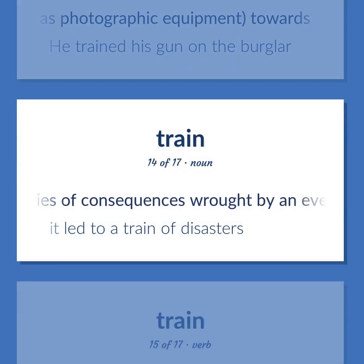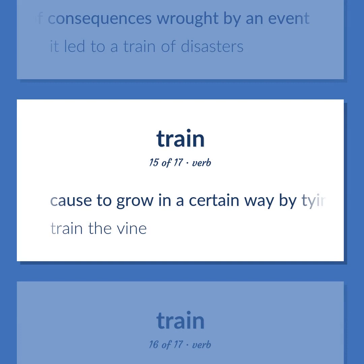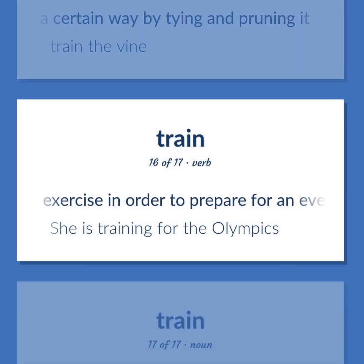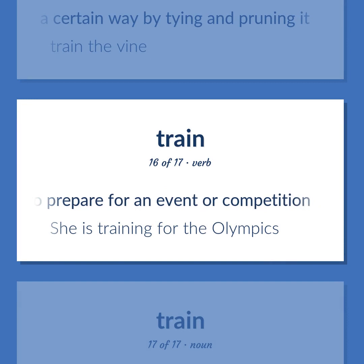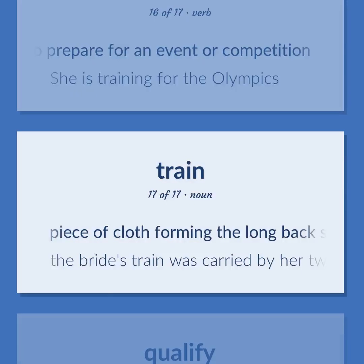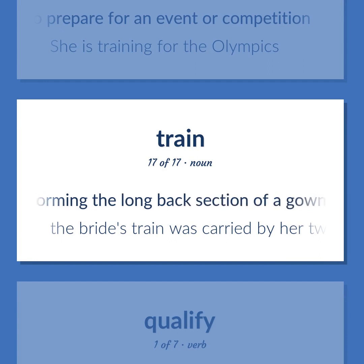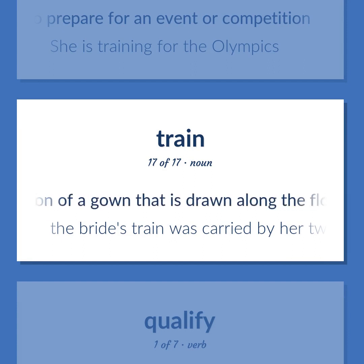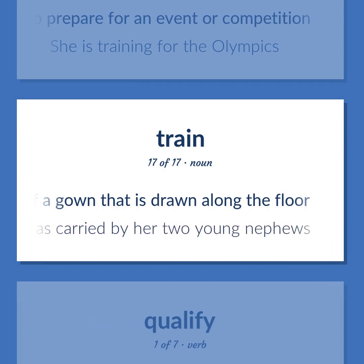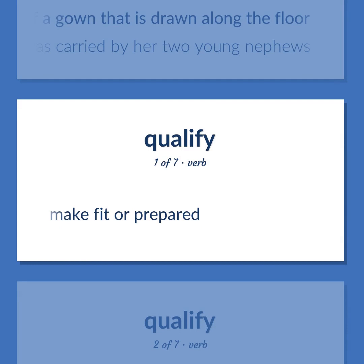Train: a series of consequences wrought by an event — 'It led to a train of disasters.' Cause to grow in a certain way by tying and pruning — 'Train the vine.' Exercise in order to prepare for an event or competition — 'She is training for the Olympics.' Piece of cloth forming the long back section of a gown that is drawn along the floor — 'The bride's train was carried by her two young nephews.' Make fit or prepared.